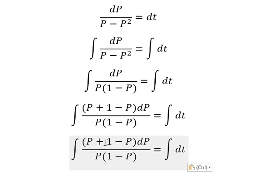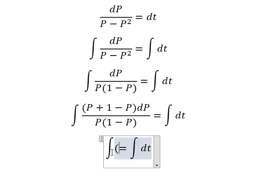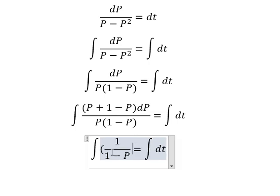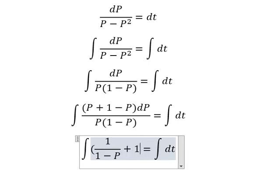So P divided by P, 1 minus P divided by 1 minus P. So this one you will have about 1 over 1 minus P plus 1 over P.